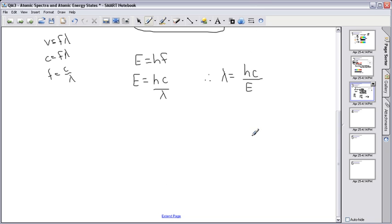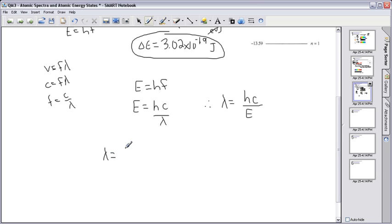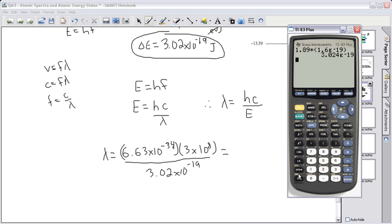So in this case, let's actually try to calculate. So I have my lambda then is equal to H. Remember, you can look this up on your equation sheet. H is 6.63 times 10 to the minus 34, times C, which is the speed of light, which is 3 times 10 to the 8 meters per second. All that divided by my answer of 3.02 times 10 to the minus 19.